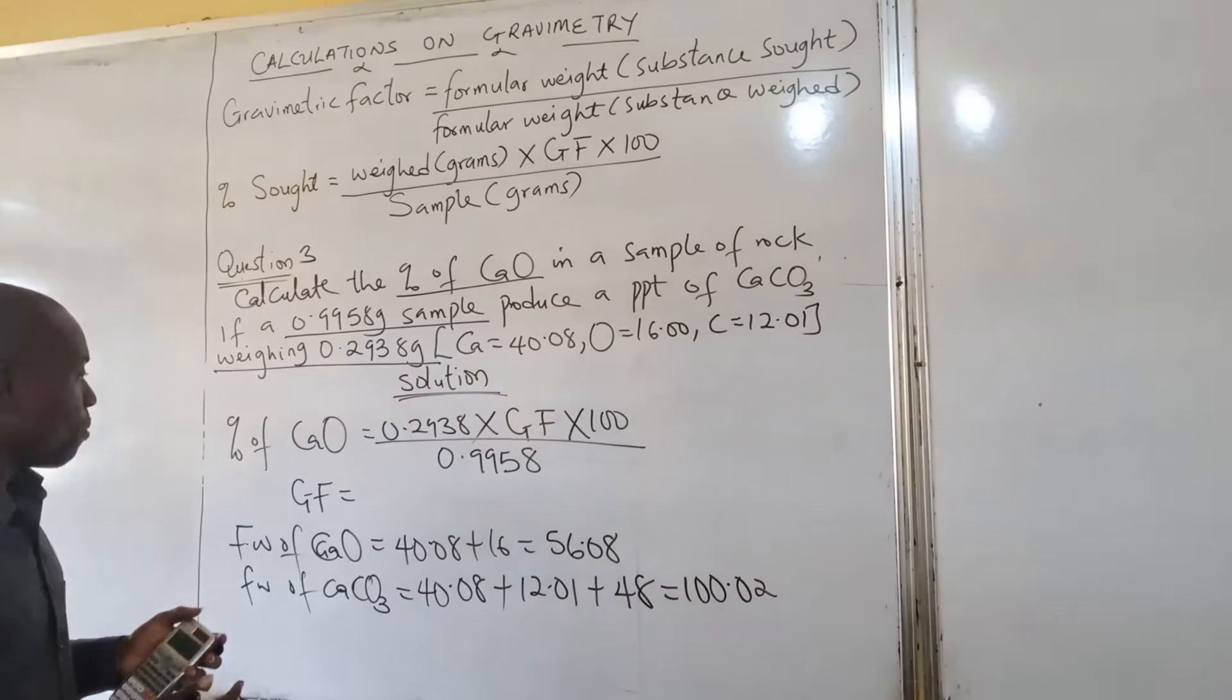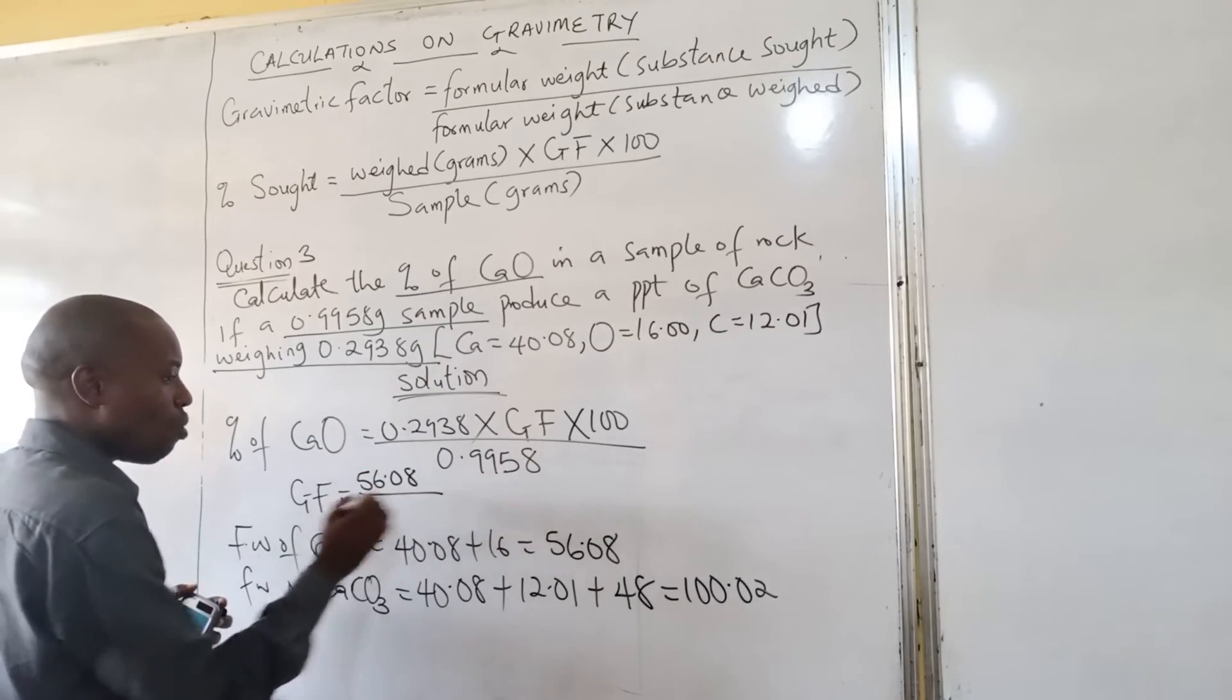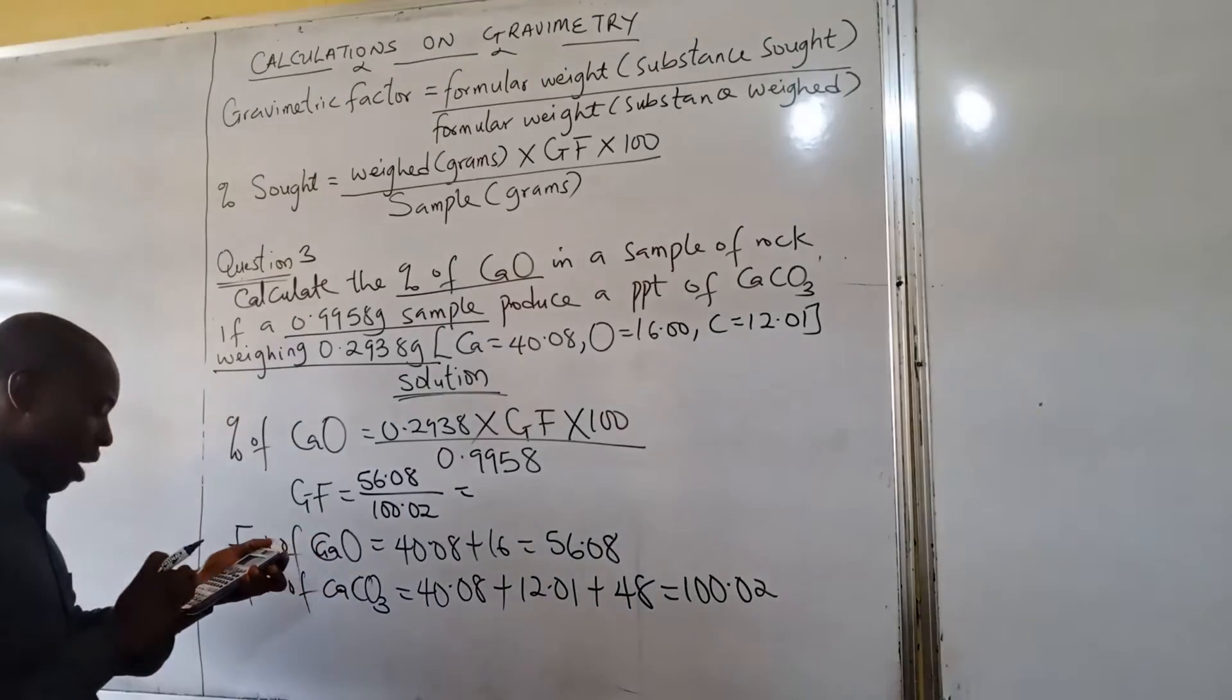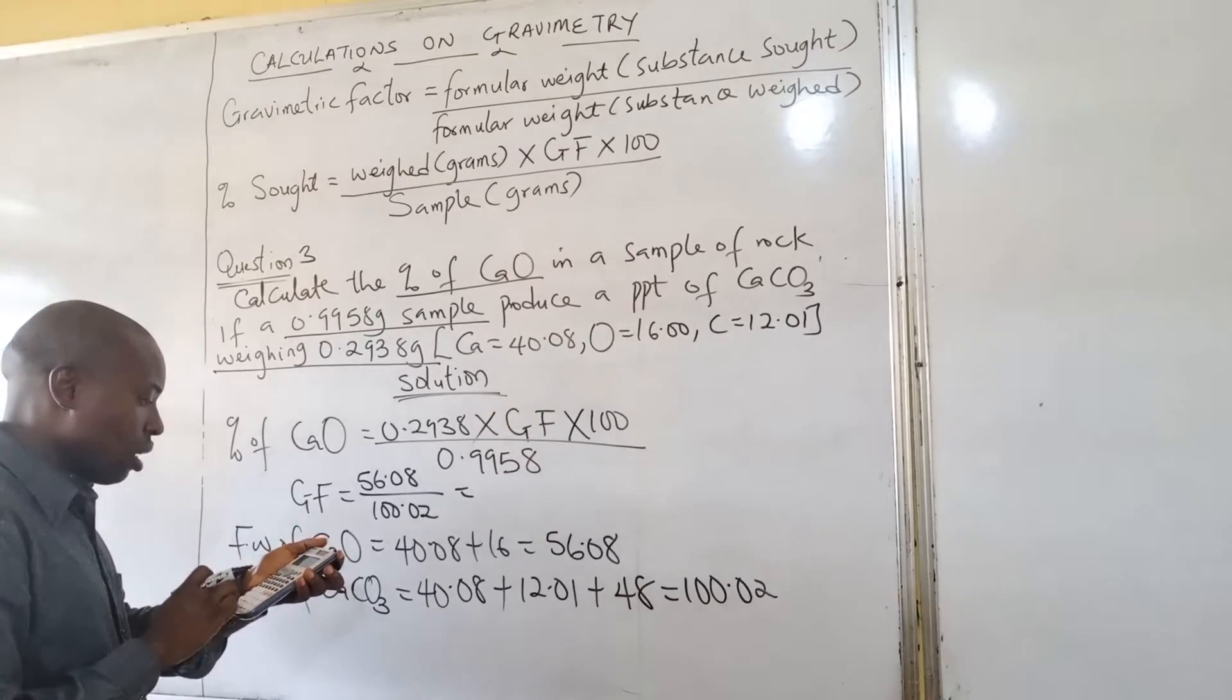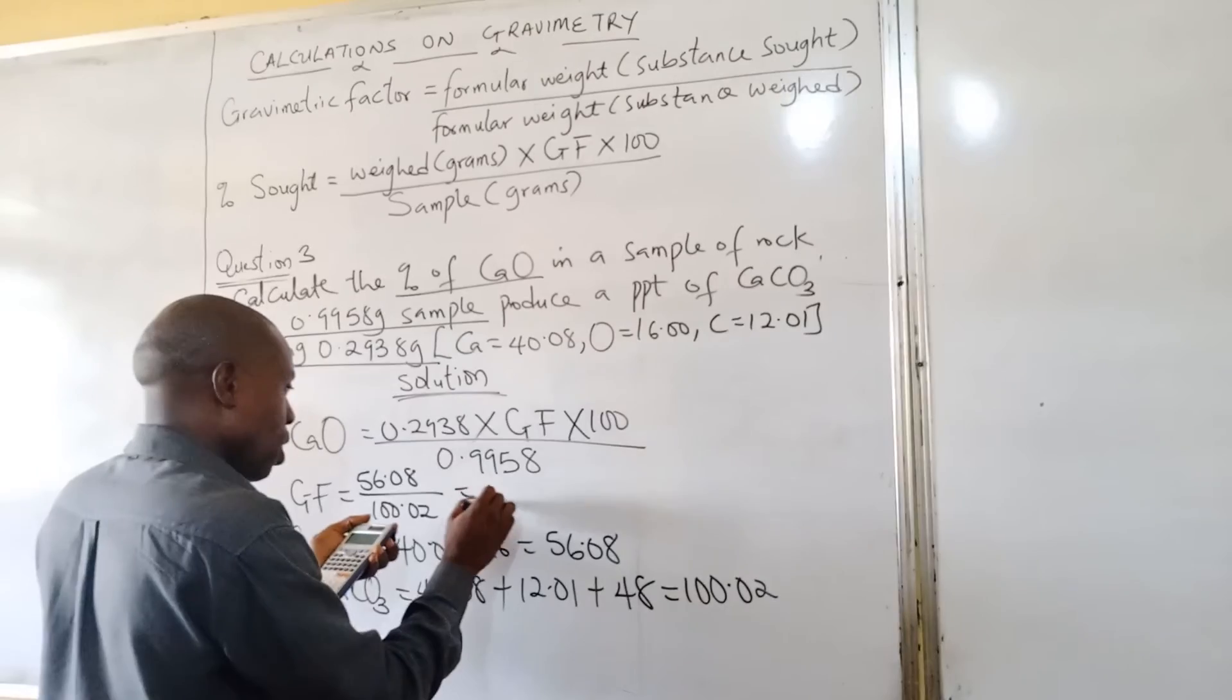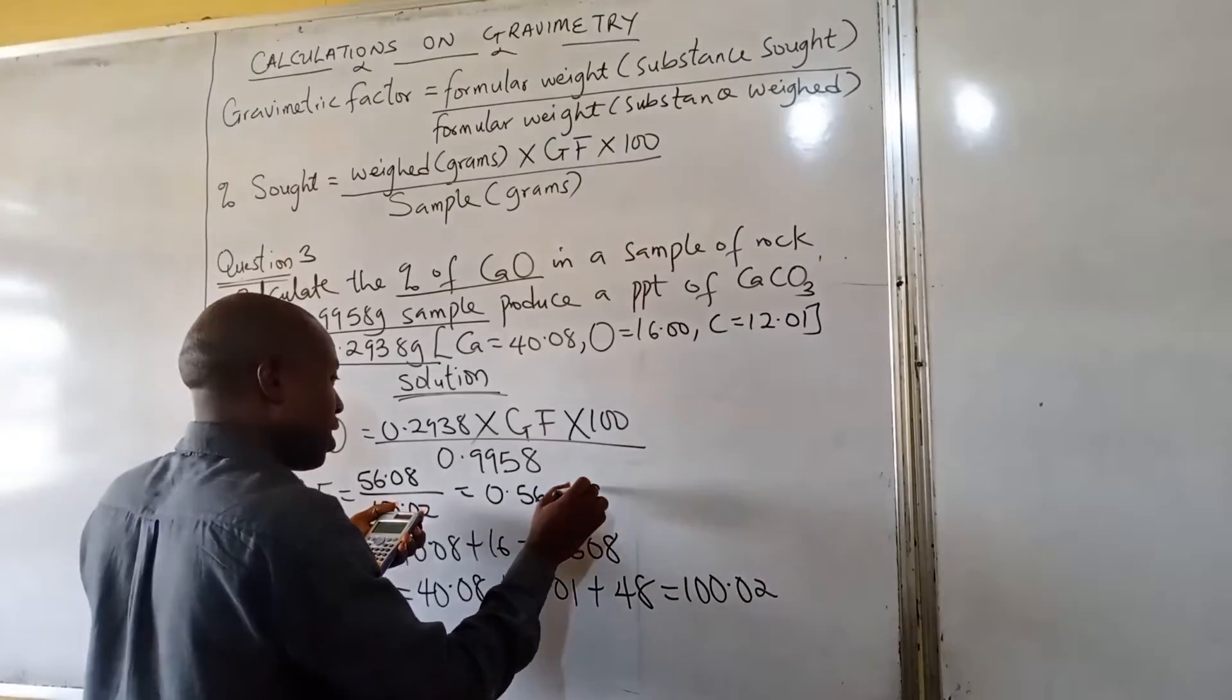Now, we move ahead quickly. So here, the gravimetry factor becomes 56.08 over 100.02, which when I divide 56.08 divided by 100.02, that should give me 0.56069.